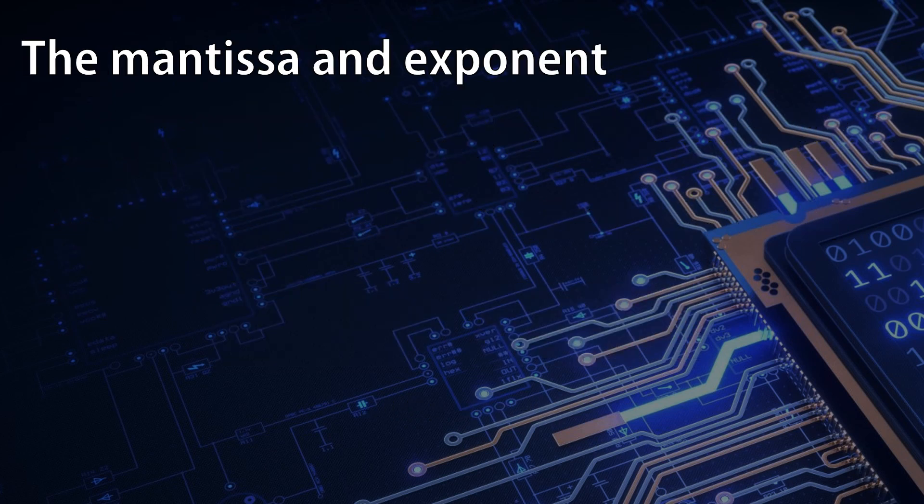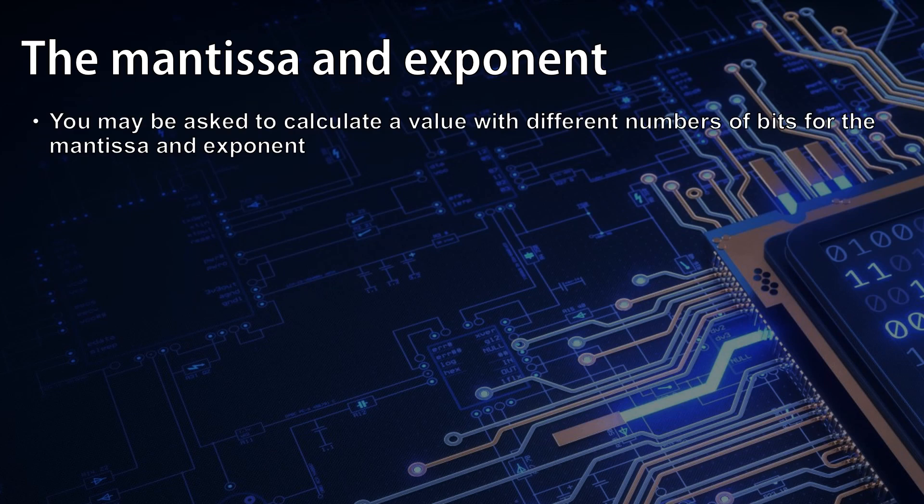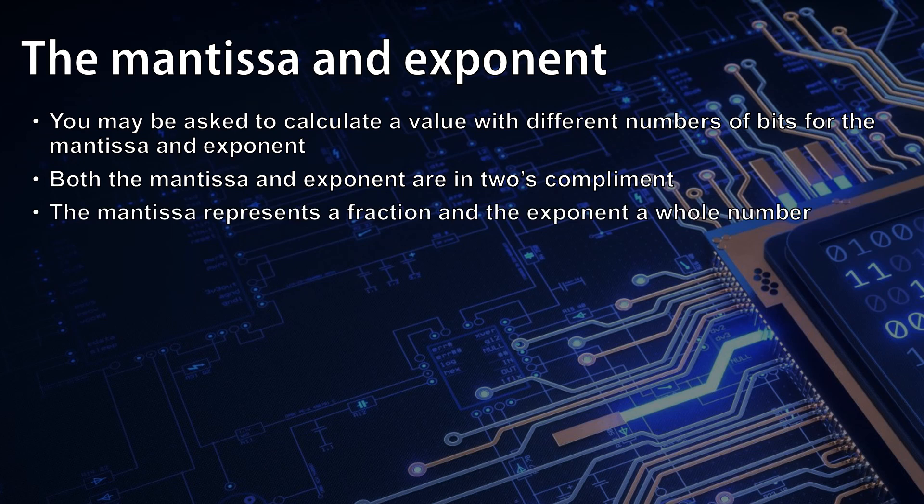You may be asked to calculate the value of a number given the number of bits for the mantissa and the number of bits for the exponent. Both the mantissa and exponent are always represented in two's complement so the most significant bit in each will always be the only one that's negative. The mantissa represents a fractional value and the exponent a whole number.